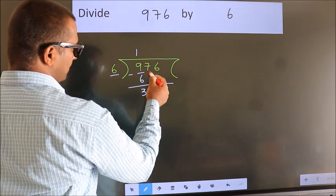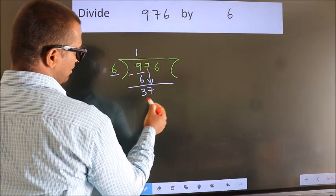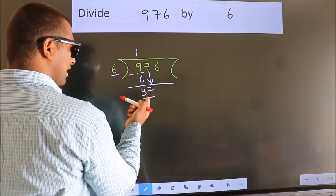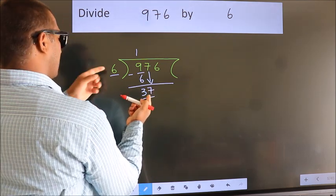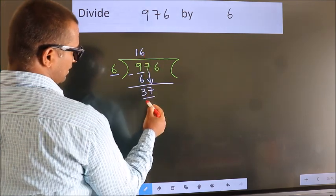After this bring down the beside number. So 7 down. Now so 37. A number close to 37 in 6 table is 6 6 36.